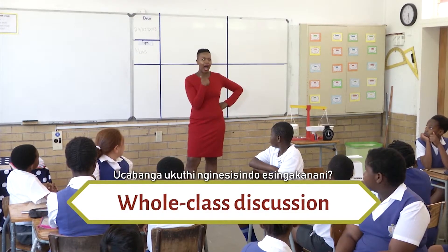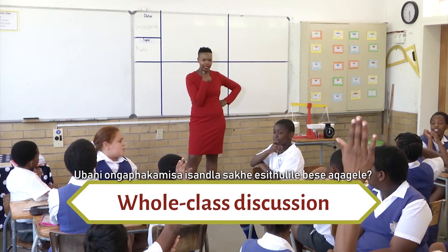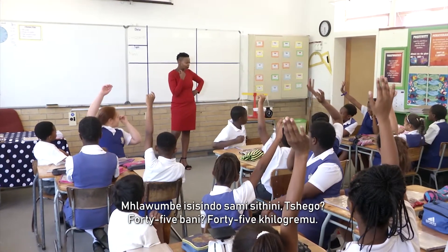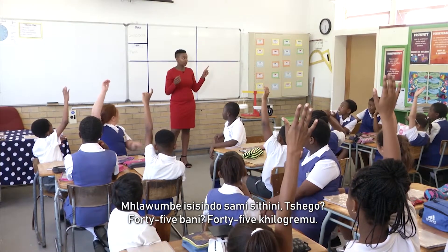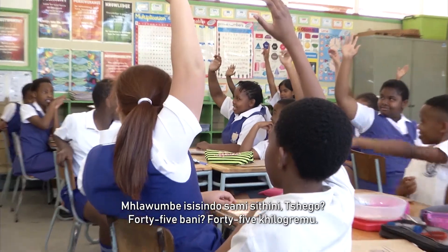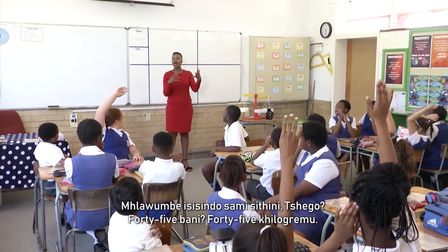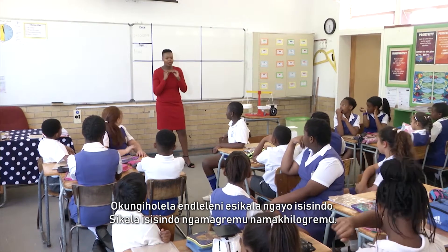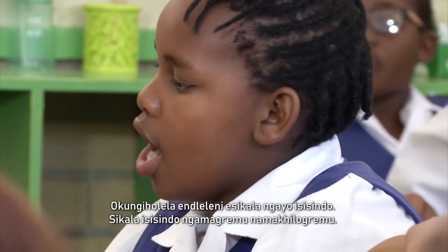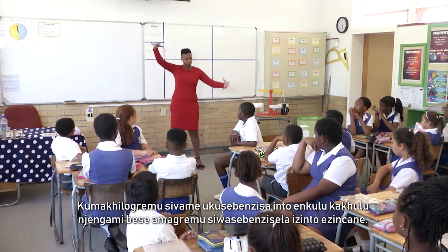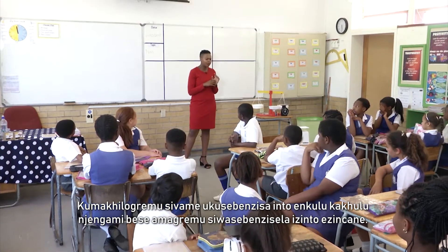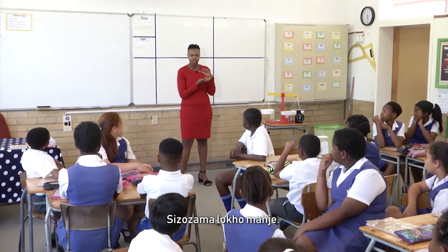How much do you think I weigh? Who can raise their silent hand? How much do I possibly weigh? 45 kilograms. Which leads me to how we measure mass. We measure mass in grams and kilograms. Kilograms we usually use for something that's really big, like myself. And grams we use for small little objects — and we'll try that just now.